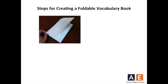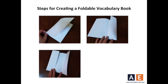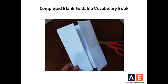As you can see in the picture, on the upper left-hand side is a standard size sheet of paper. First, fold it in half. Now, open the paper and fold one of the sides into the middle like this. Next, fold the other side of the paper into the middle like this. For the last step, cut a line halfway down one of the sides of the first fold. Then, cut a line halfway down one of the sides of the second fold. Your blank foldable vocabulary book should look like this.